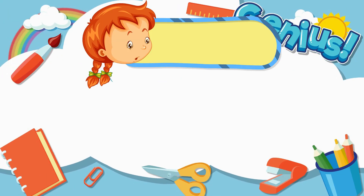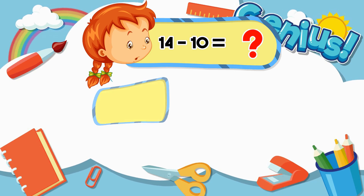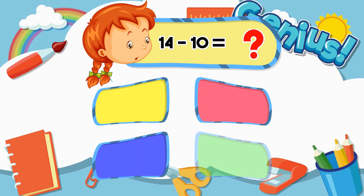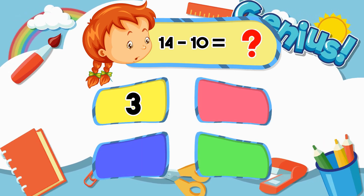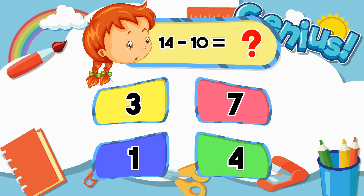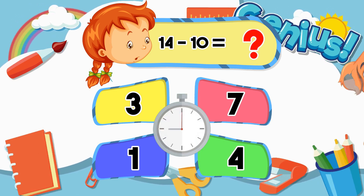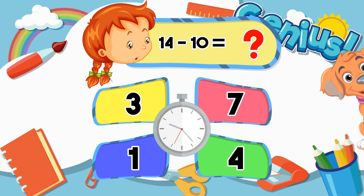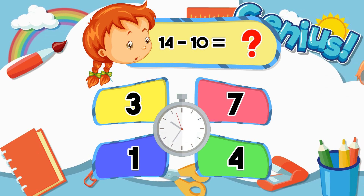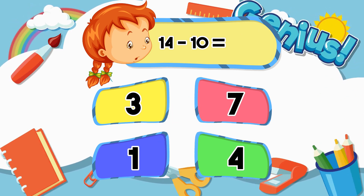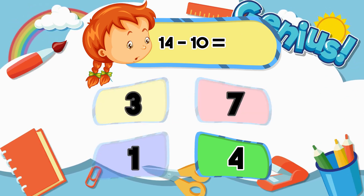What is 14 minus 10? 3, 7, 1, 4. Answer: 4.